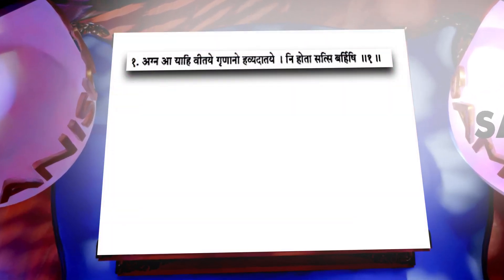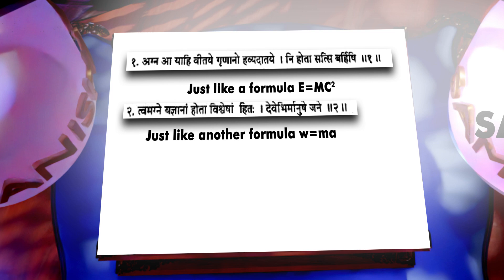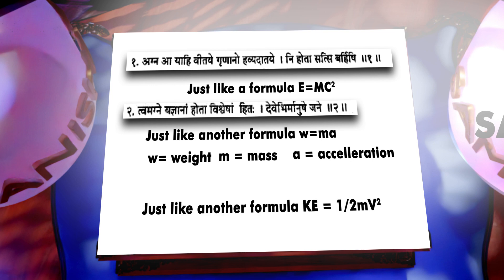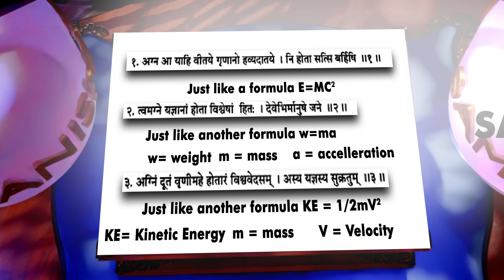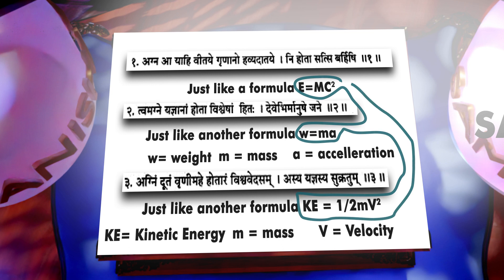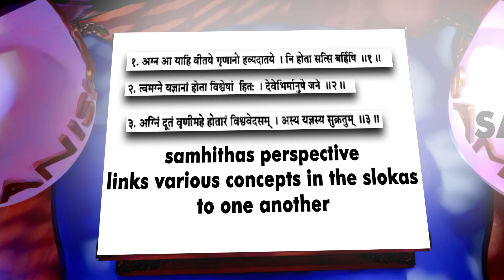The third perspective is called Samhitas. Here, in one shloka of Rig Veda we have a formula like E = mc², and in another verse we have W = ma — where W stands for weight, M for mass, and A for acceleration. And another formula, KE = ½mv², where KE means kinetic energy, M means mass, and V is velocity. When we see these shlokas from the perspective of Samhita, we can understand the relationship between these three formulas. The Samhita perspective makes the learner understand how to combine formulas to derive answers for a particular problem, allowing you to link various concepts from various shlokas in the Vedas.